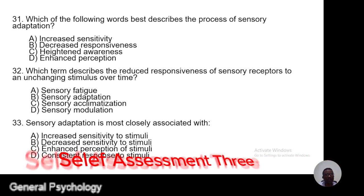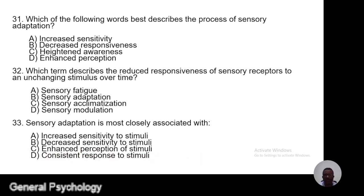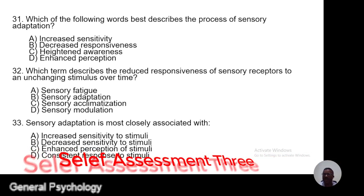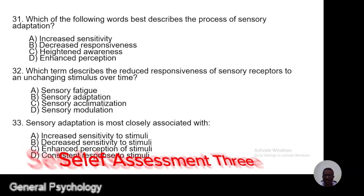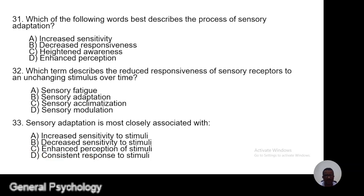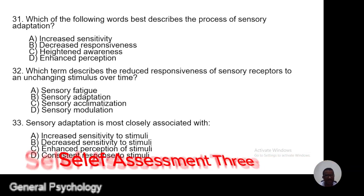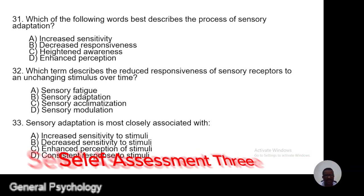Question 31. Which of the following words best describes the process of sensory adaptation? A, increased sensitivity; B, decreased responsiveness; C, heightened awareness; D, enhanced perception.